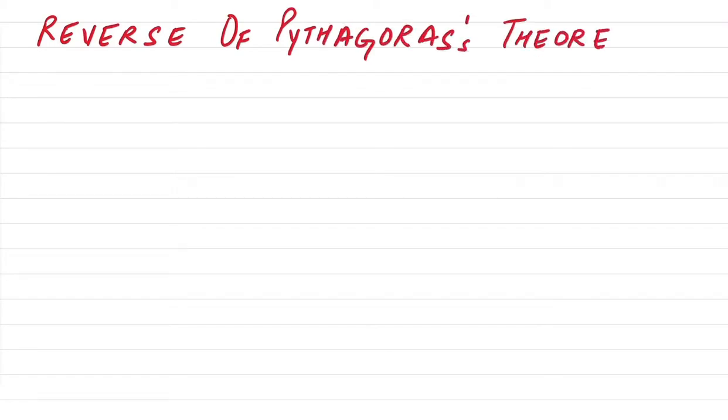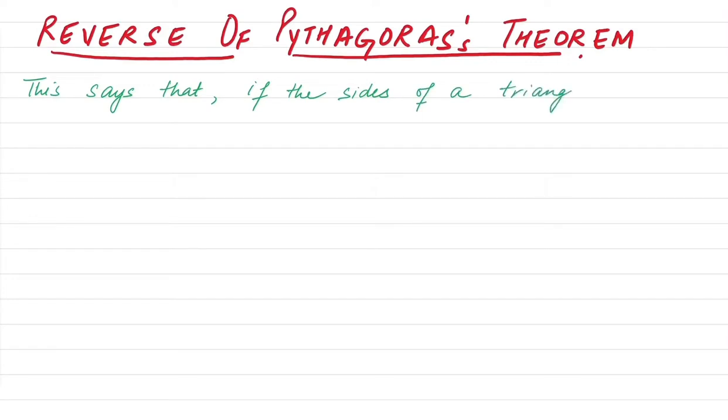The reverse of the Pythagoras Theorem says that if the sides of a triangle satisfy C² = A² + B², then the angle opposite side C is a right angle.